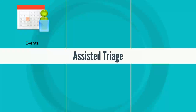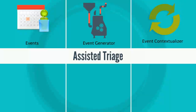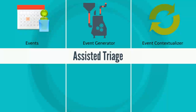An event generator gathers event data from different sources and sends the data to the event processor. The event contextualizer receives the events from generators across a cluster, processes the events, and gathers any related events into a context.